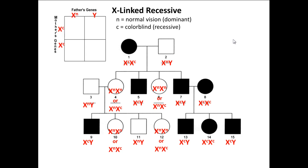Looking at a quick Punnett square: here we have a father with normal vision and a colorblind mother — this cross between grandma and grandpa. Notice 50% of the kids are male and 50% are female. Of the males, all of them are going to be colorblind, and none of the girls are going to be colorblind. This is what we mean with an X-linked trait — it shows up in the males and is more often just carried by the females. We can see that's what happened: they had two sons, both colorblind, and two daughters who are both determined to be carriers.